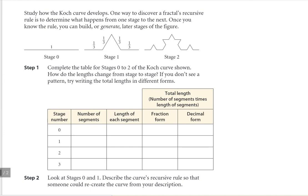The first thing we want to do is look at how we're moving from stage to stage. This one's a little bit trickier than the Sierpinski triangle or some of the other fractal designs we've looked at. Basically, what happens when we move from stage to stage is we take one segment and we end up splitting it into four segments. So we took this one segment in stage zero and split it up into one, two, three, four segments in stage one.